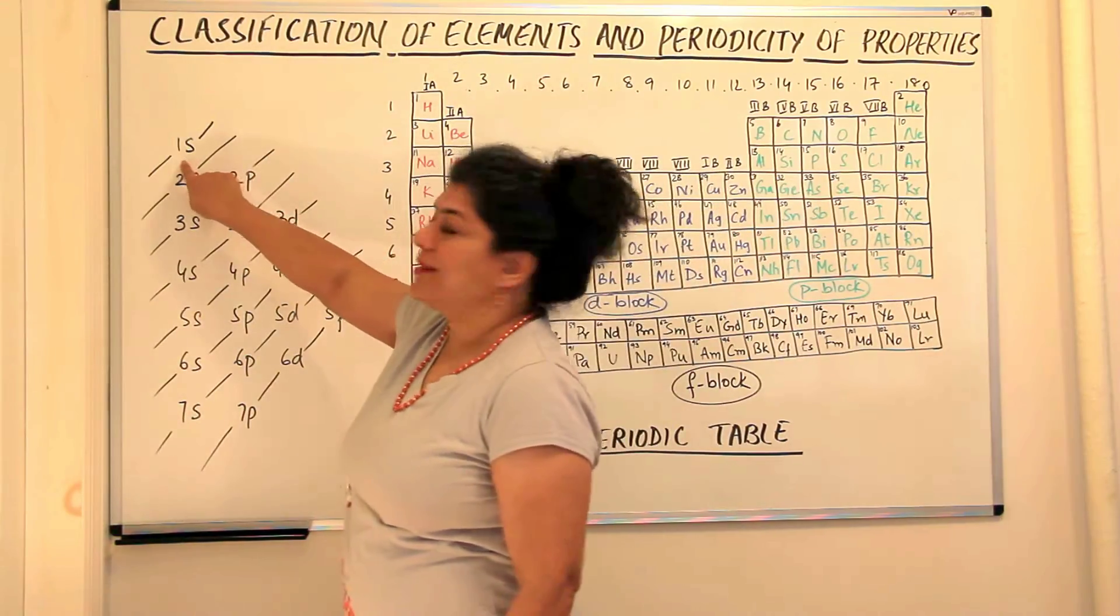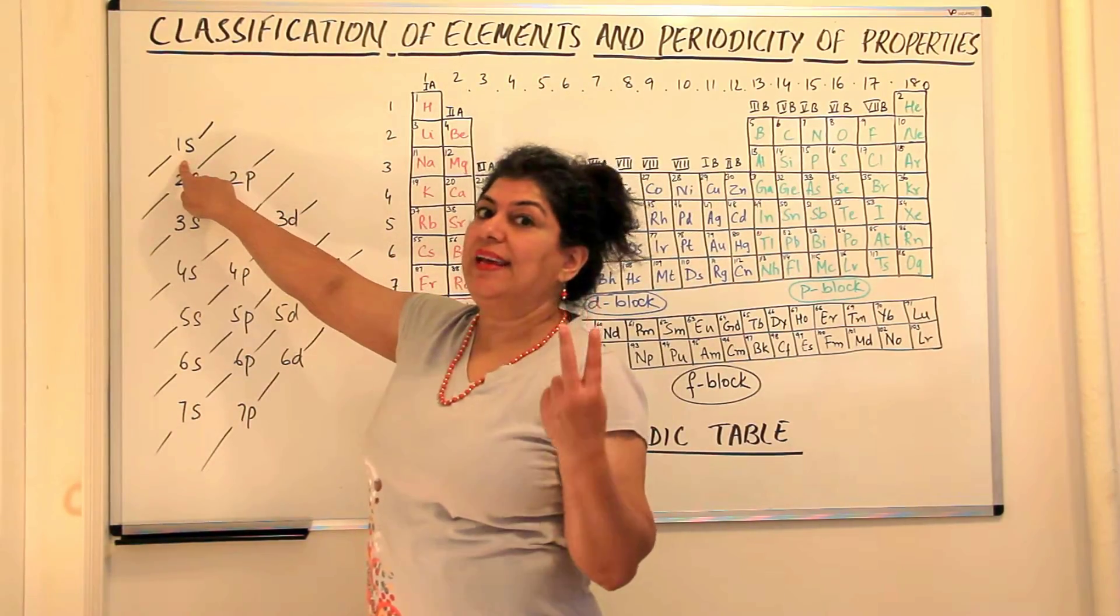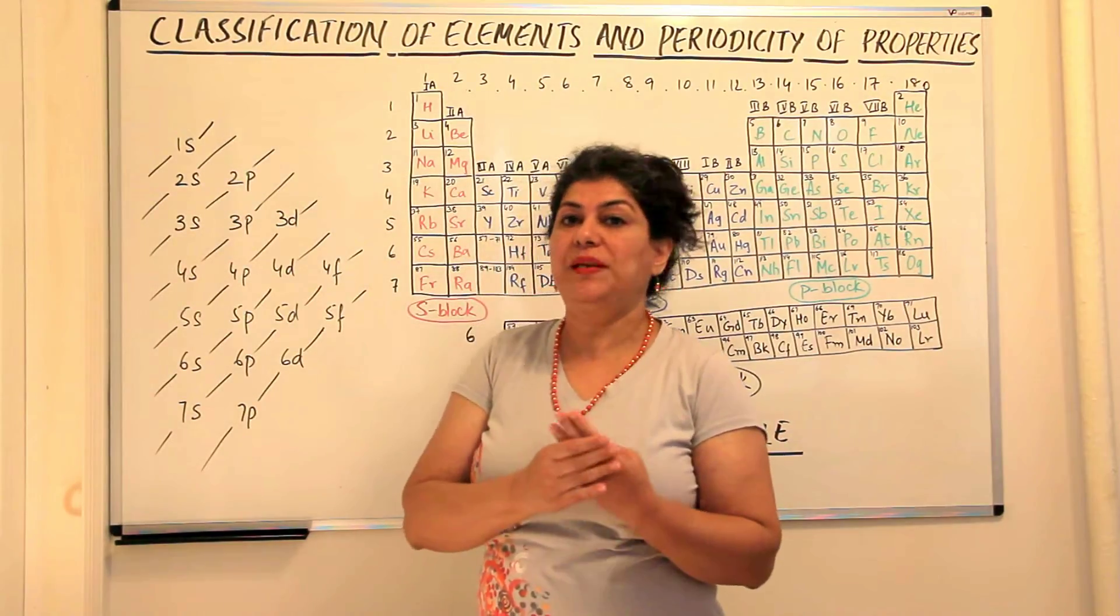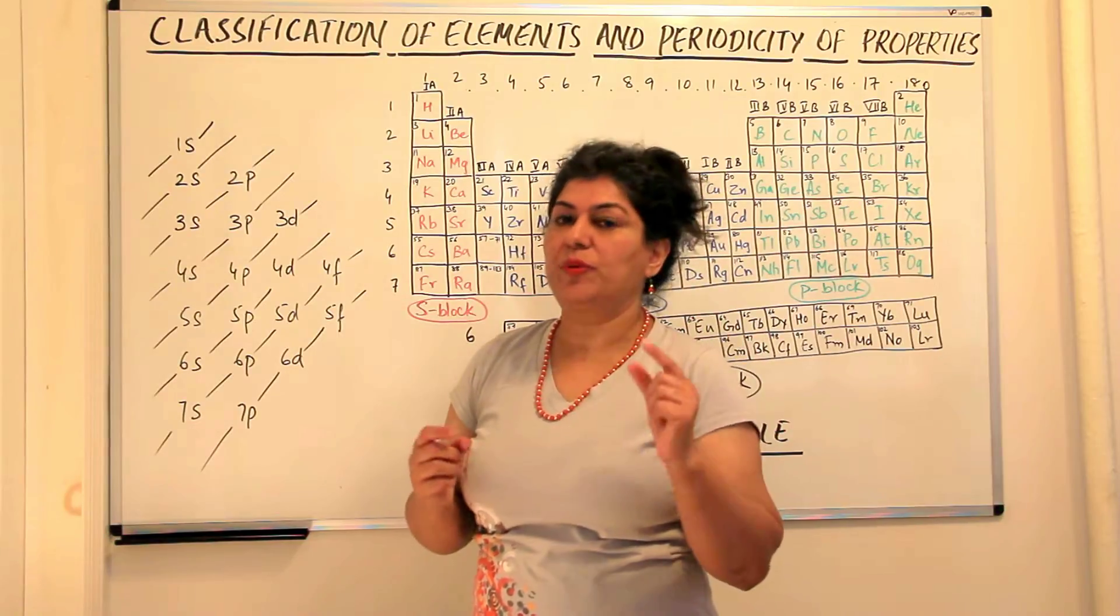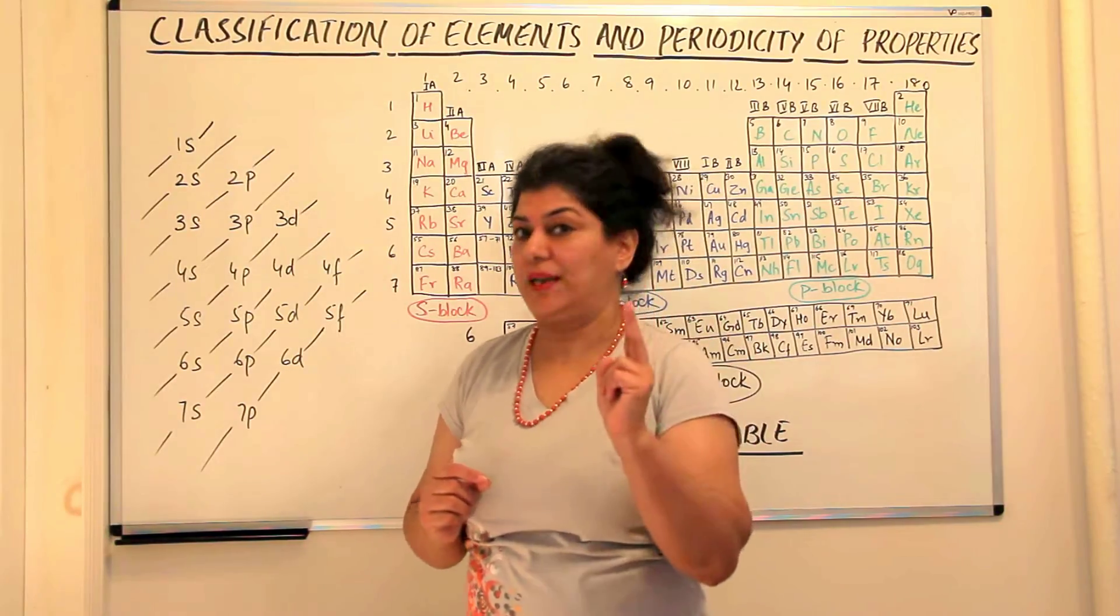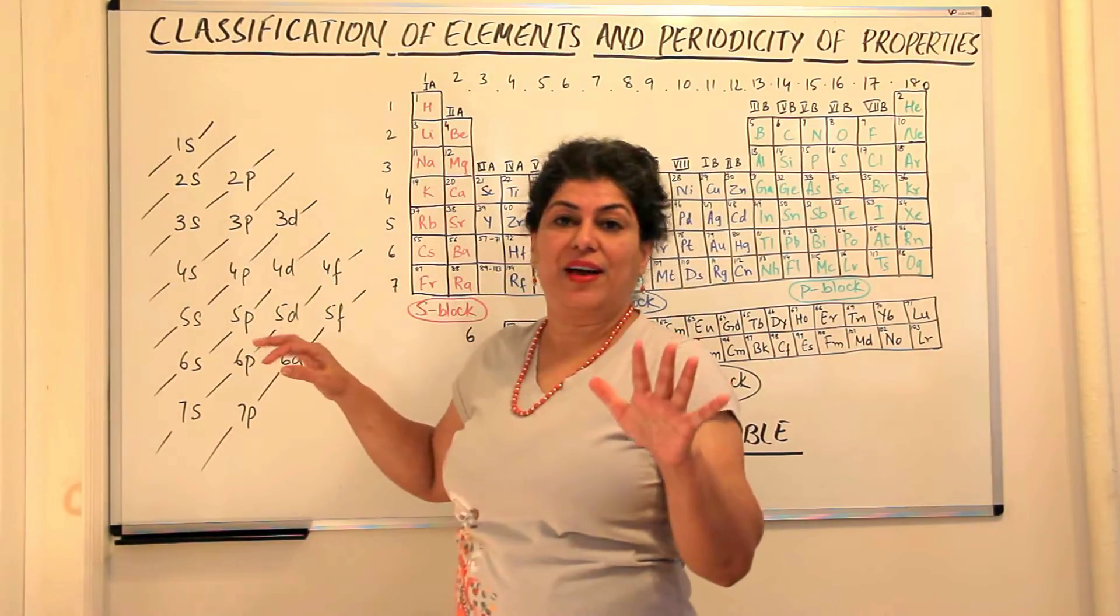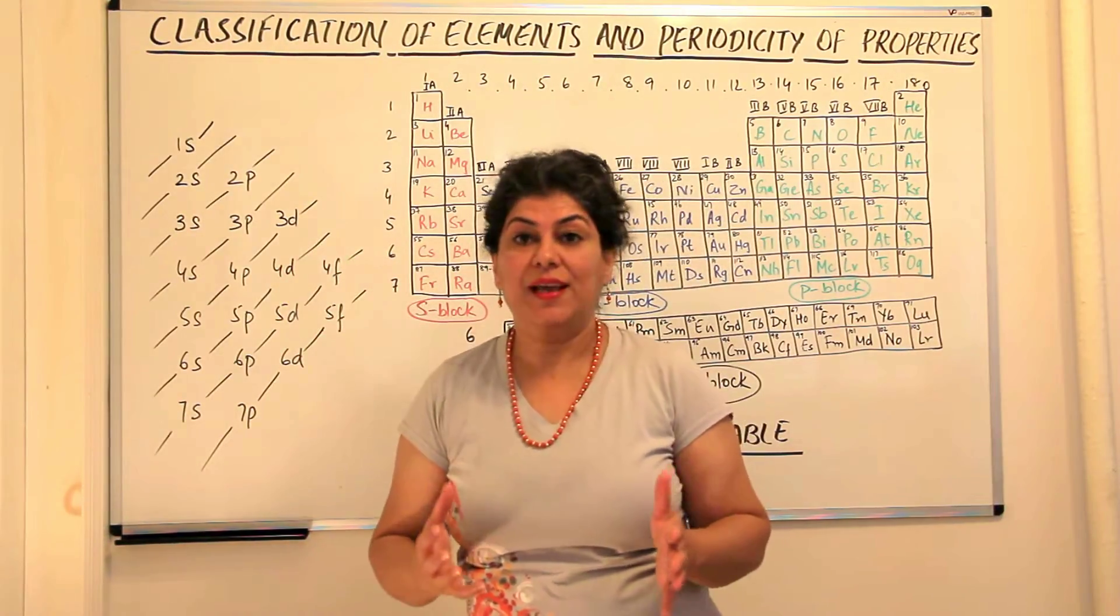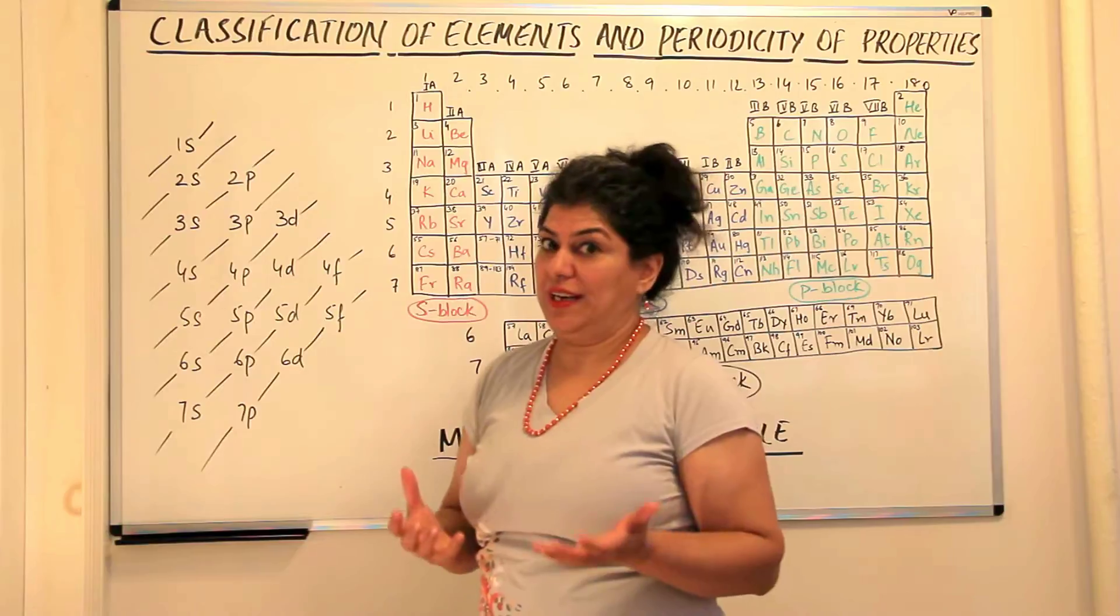The S orbitals have only 1 orbital and they contain 2 electrons. The P sub shell has 3 orbitals and they have 6 electrons because every orbital has 2 electrons. D orbitals are 5 and they have 10 electrons and F orbitals have 7 and they can have 14 electrons.